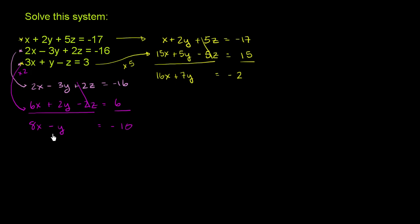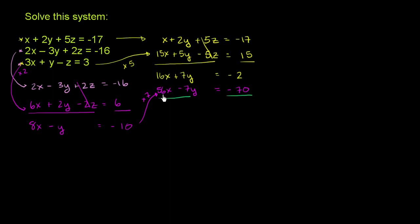Now we have two equations with two unknowns. We have a negative y and a positive 7y, so we can eliminate the y's by multiplying the second equation by 7 and adding. 7 times 8 is 56x minus 7y equals negative 70. Adding: 16x plus 56x is 72x, the y terms eliminate, equal to negative 72. Dividing both sides by 72, we get x equals negative 1.